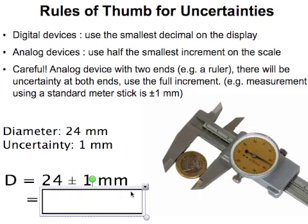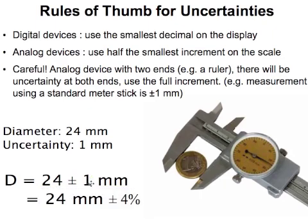Another way that is common to represent the uncertainty would be to convert the 1 millimeter into a percentage. We'll discuss later what the use of this is. So 1 millimeter is 4% of 24. One thing to keep in mind is when you're writing your uncertainties, you should always keep your uncertainties rounded to one significant digit.